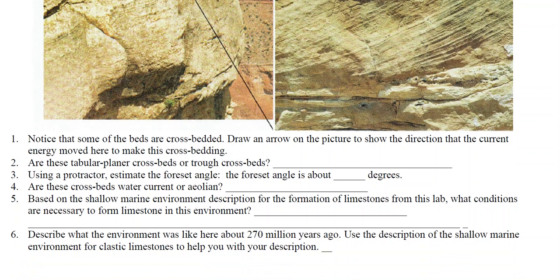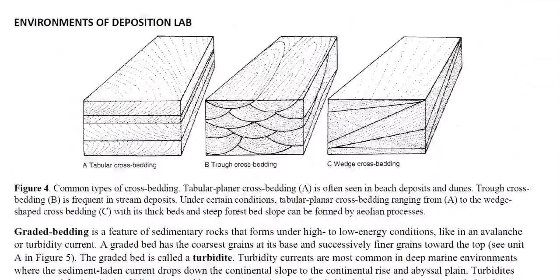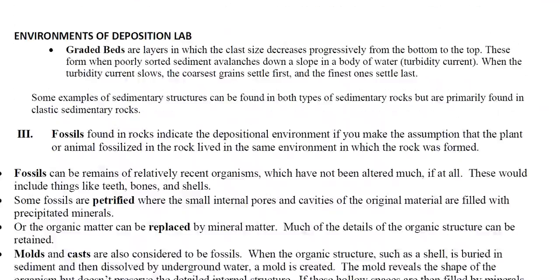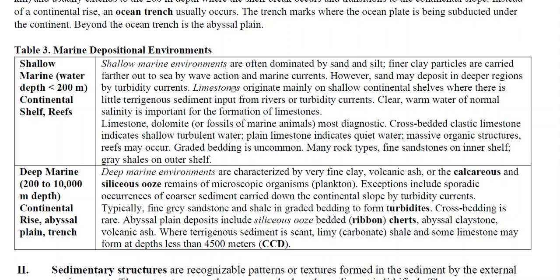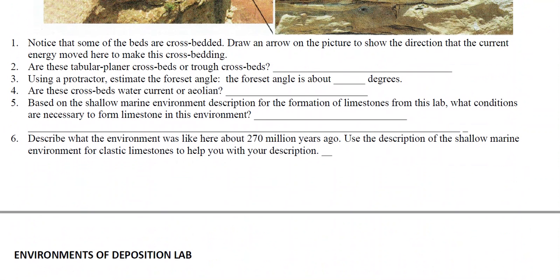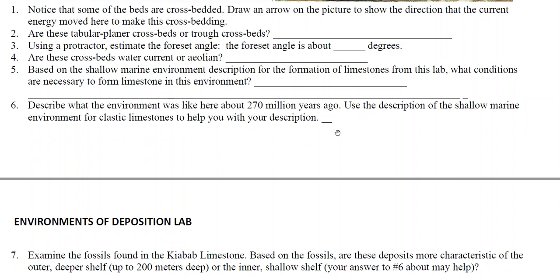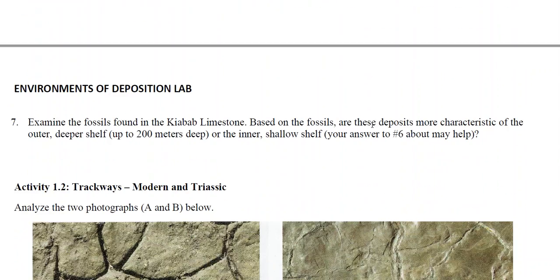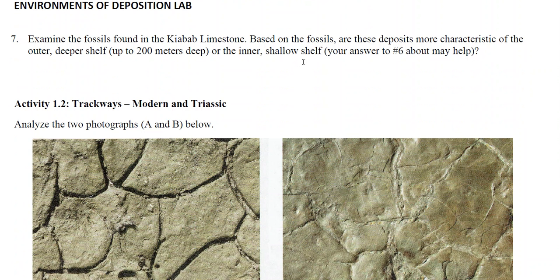Based on the shallow marine environment description, read about what conditions are necessary. There are some very specific points mentioned in the earlier video for this lab — read the section about limestones and add that to your answers. This is Permian time, so based on the descriptions and pictures, describe what the environment was like: the ecosystem, the conditions, maybe the water depth. Elaborate to fill out question 7, and say more about the fossils.